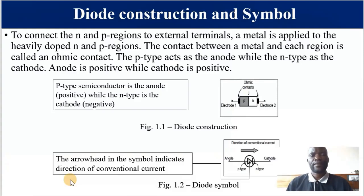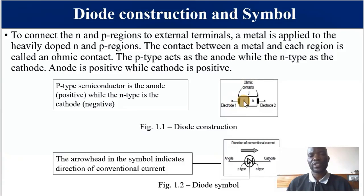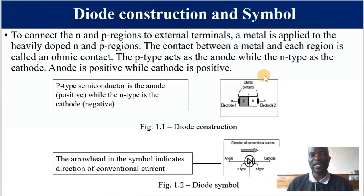Diode construction and diode symbol: we chemically join the P and N-type materials using special fabrication techniques. The P-type material and the N-type material meet at the junction, represented by a black line. To connect the diode to an external circuit, we need external wires, and where they meet the P and N-type material, these are called ohmic contacts — they have very low resistance to the flow of current. So we now have two electrodes.